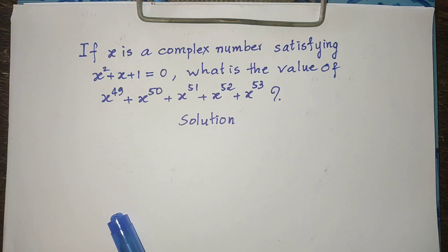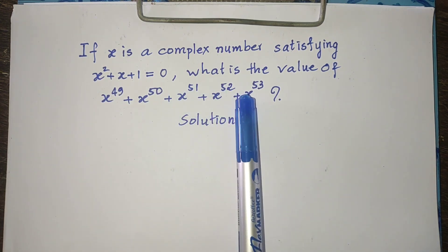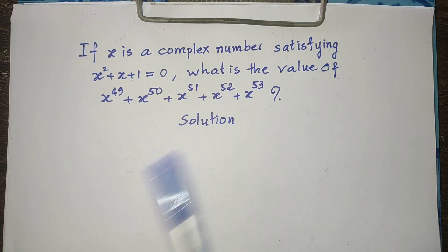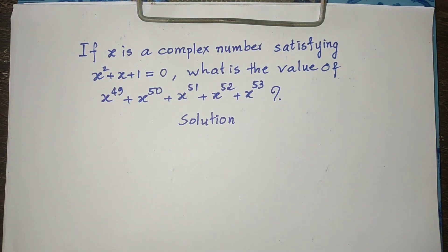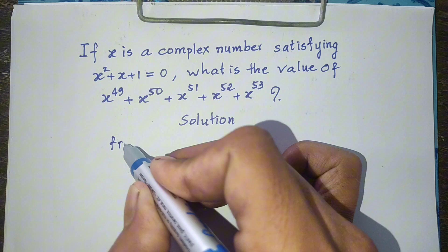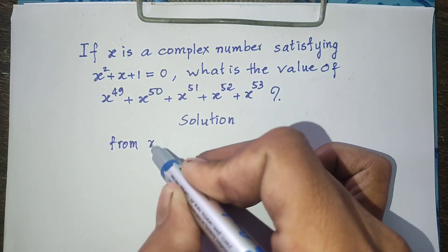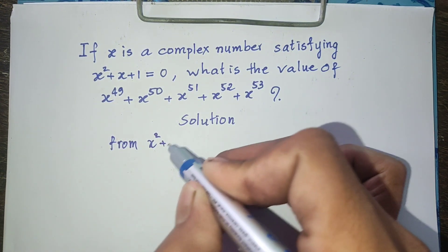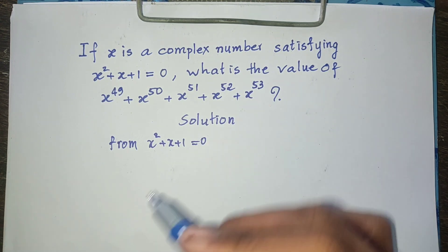Okay, now we go to the solution together. To find the value of this expression, I use this equation: h squared plus h plus 1 equals 0.